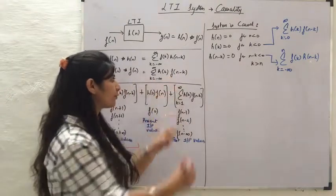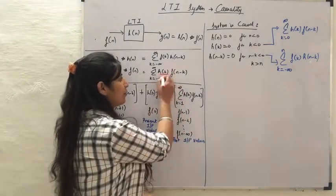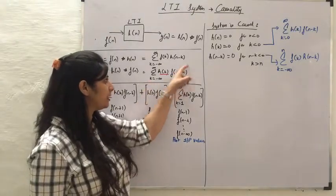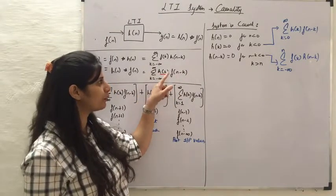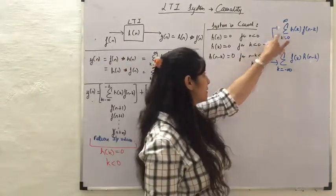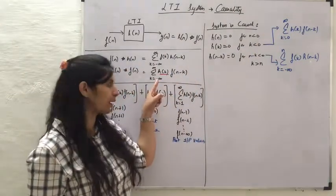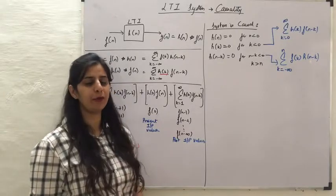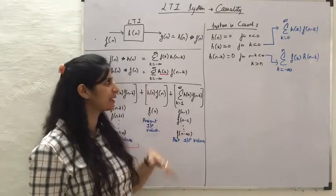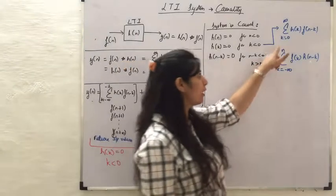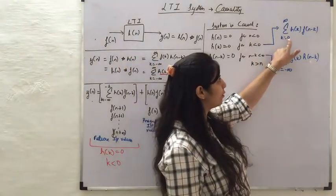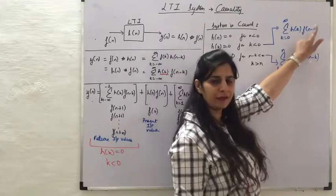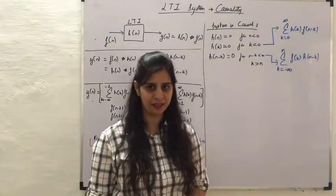In the convolution definition, the variable is H(K). When we define a causal system, this summation changes because H(K) becomes 0 for K less than 0, so it will have values only when K is greater than or equal to 0. The summation now goes from K equals 0 to infinity of H(K) multiplied with F(N minus K) to define a causal system.